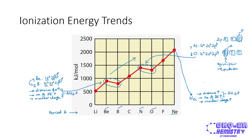So those are the ionization energy trends down the group and across a period, and how ionization energy values can help us determine electronic configurations. I hope you enjoyed this video — if you did, please leave a like and subscribe to the channel, and I will see you in the next video.